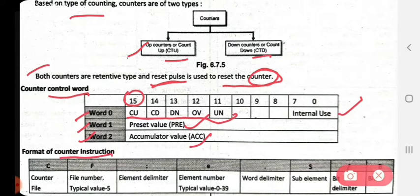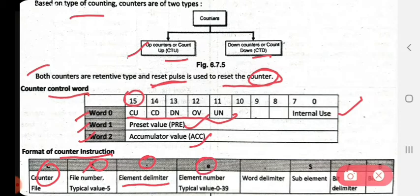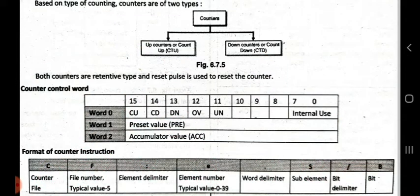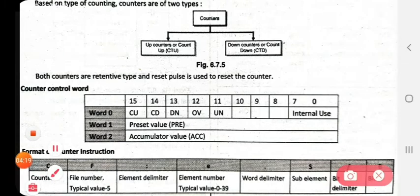The format of the counter instruction is similar to the timer instruction format. C indicates counter file, F is the file number with typical value 5, dot dot is the element delimiter, E is the element number with typical value 0 to 39, dot is the word delimiter, S is the sub-element, slash is the bit delimiter, and B is the bit.